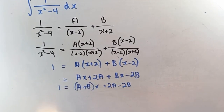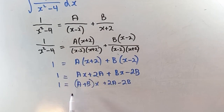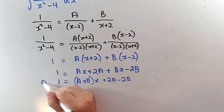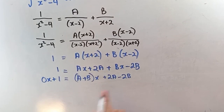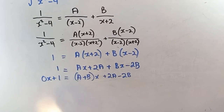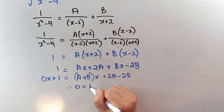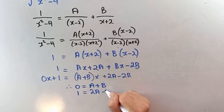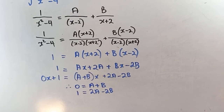This has to equal 1, which is 0x plus 1. So a plus b must equal 0, and 2a minus 2b must equal 1. We now have two equations to solve for a and b.